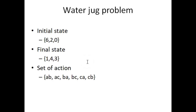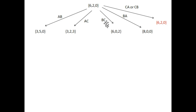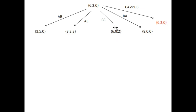The first jug has 8-liter capacity, the second jug has 5-liter capacity, and the third jug has 3-liter capacity. When we apply action BC, it means we are moving water from jug B to jug C. Jug B has 2 liters of water. The new state will be 6,0,2.